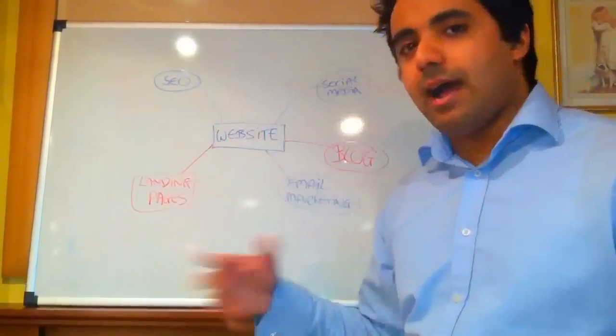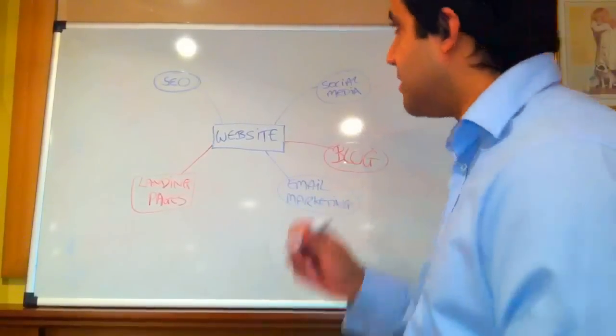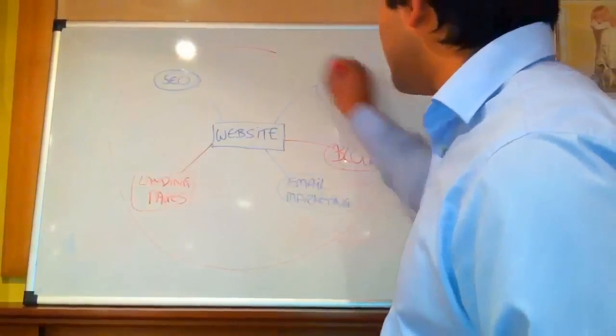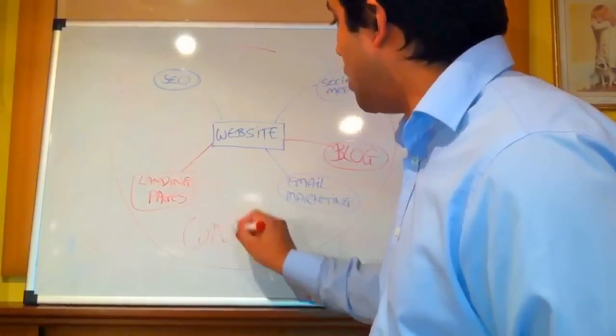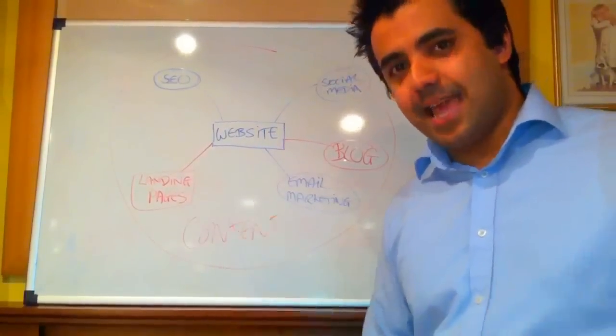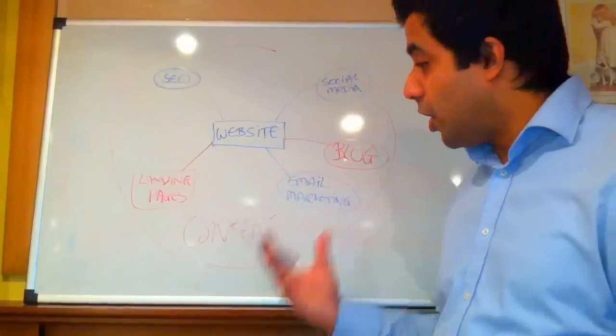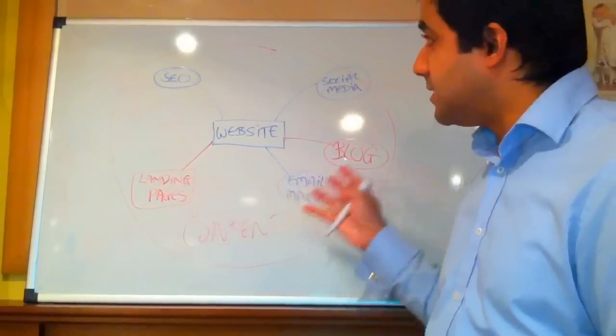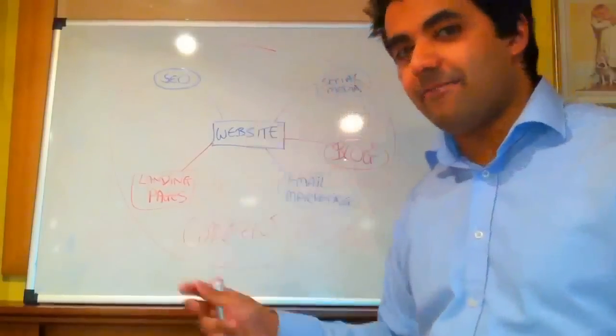But all those things together have to revolve around one main thing as well, and that is content. Content is king when it comes to online marketing. Content is the thing that has to encompass everything.